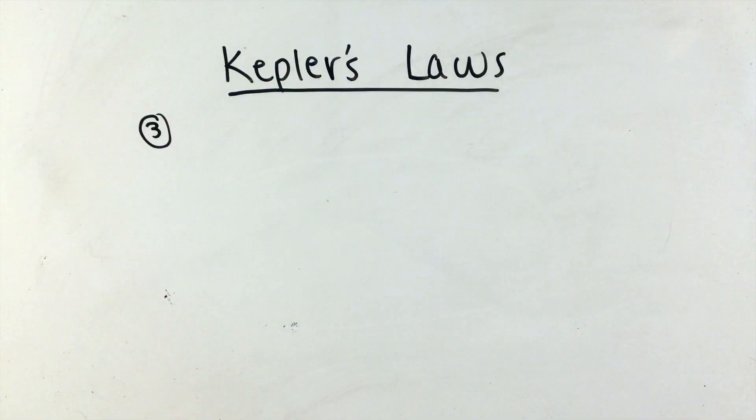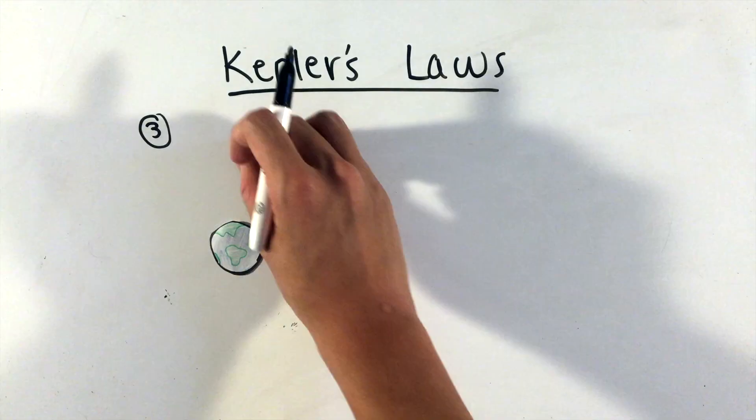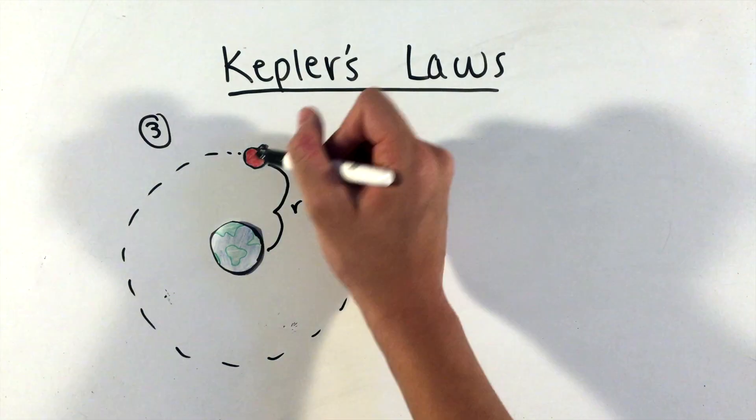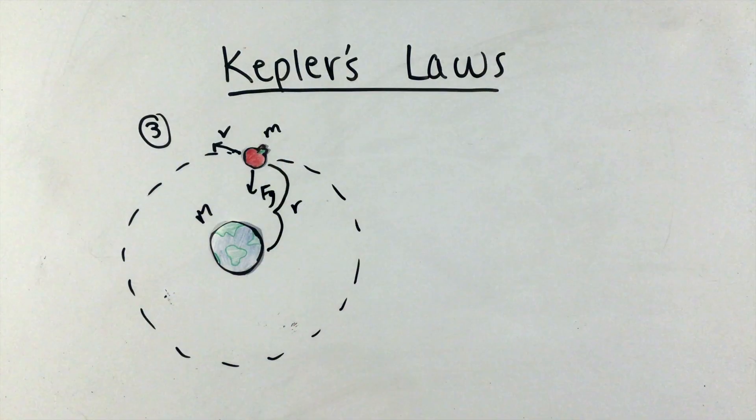Kepler's third law, arguably the most useful for AP Physics C, describes the relationship between period of orbit and semi-major axis, which we can actually derive here quite simply for specifically a circular orbit.